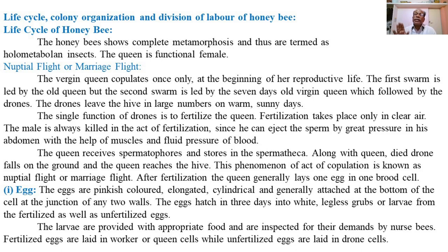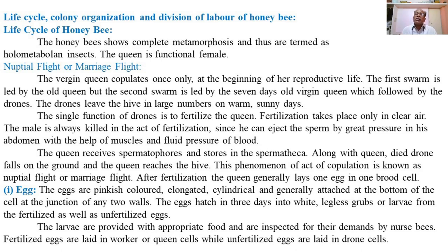Within three days, the eggs undergo embryonic development, passing through cleavage, blastulation, and gastrulation, and develop into white-colored, legless grubs called larvae from both fertilized and unfertilized eggs. The queen deposits fertilized eggs in the worker brood cells, which are smaller in size and present in thousands.